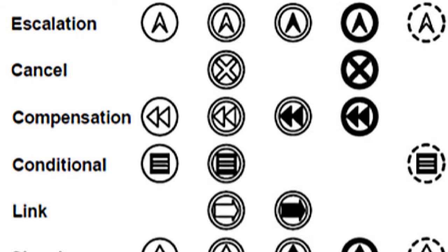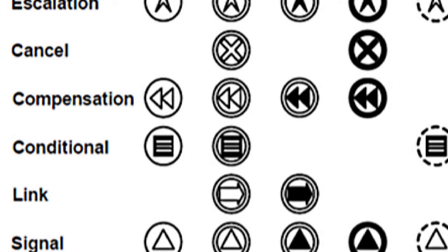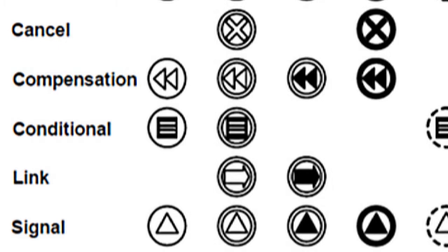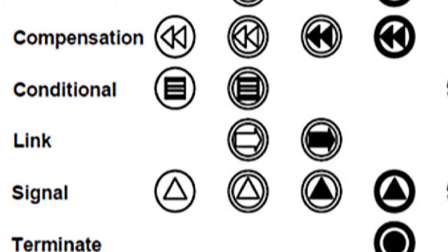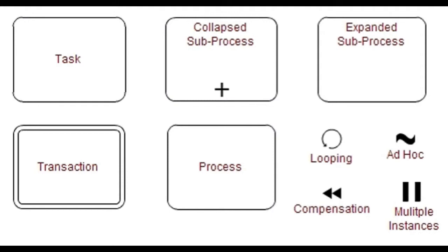The start event acts as a process trigger, indicated by a single narrow border and can only be catching, so it is shown with an open outline or icon. The intermediate event represents something that happens between the start and end events.